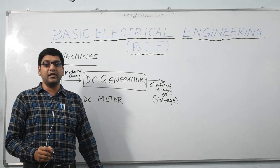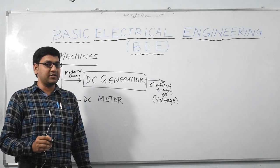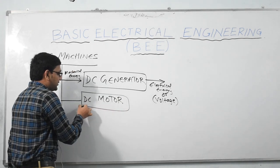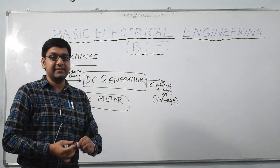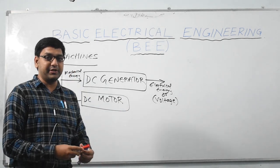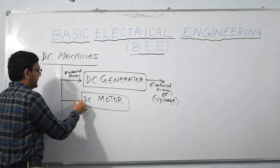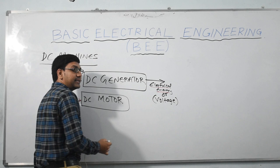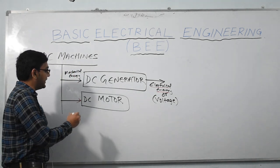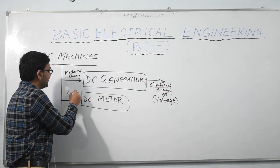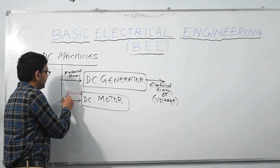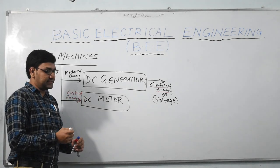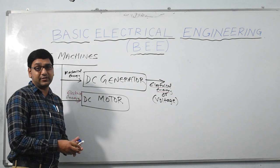The motor is an opposite machine in terms of input and output. For example, the output of the generator is electrical energy, but in the case of the motor, the input is electrical energy and the output is mechanical energy — in other words, rotating energy.